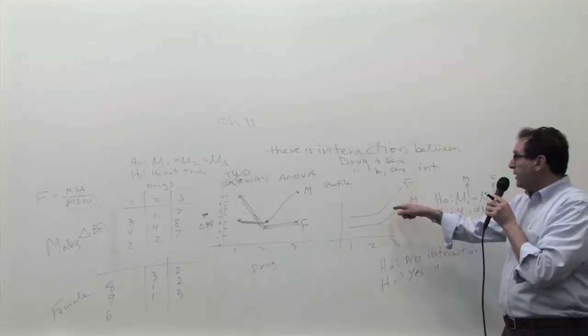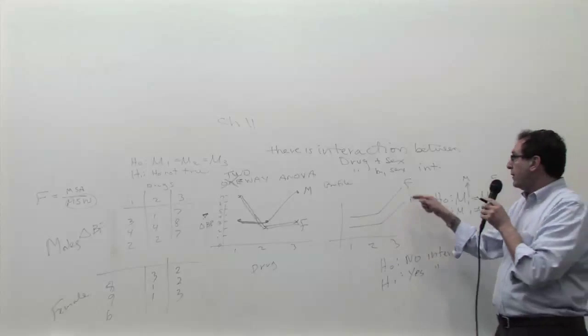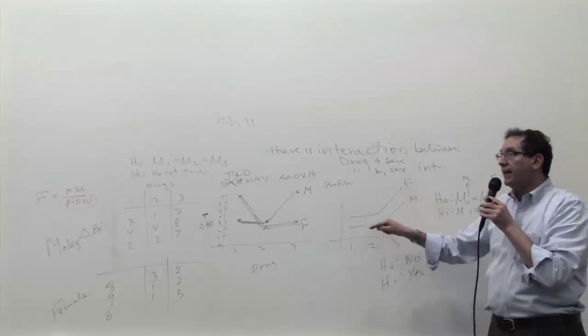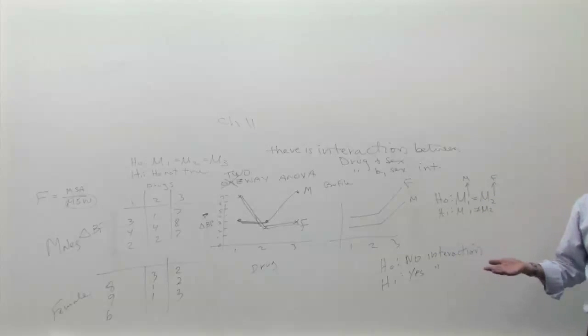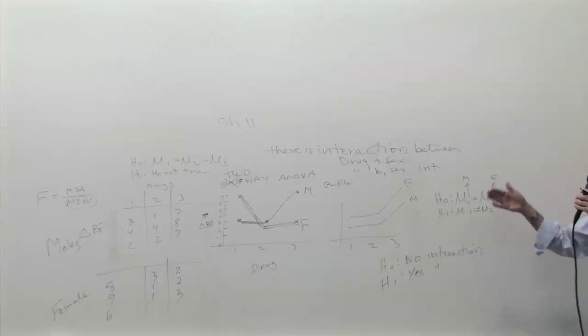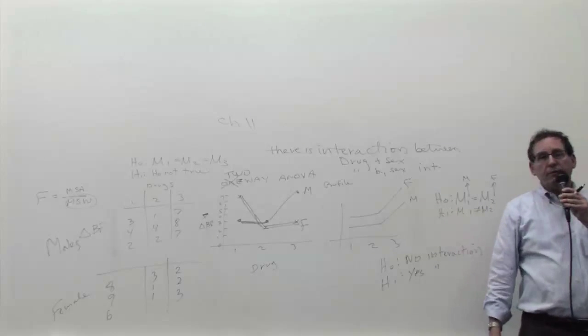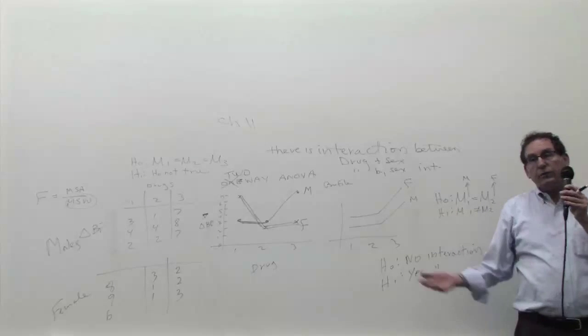In this case here, would you say that there's interaction? Well, again, drug number three is better for the females. Drug number three is better for the males. In other words, drug number three is better across the board. You don't have to qualify your statement according to the other group when you make your simple statement. So there's a simple statement that's true here. Drug number three is the best drug. So is there interaction? The answer is no, no interaction.